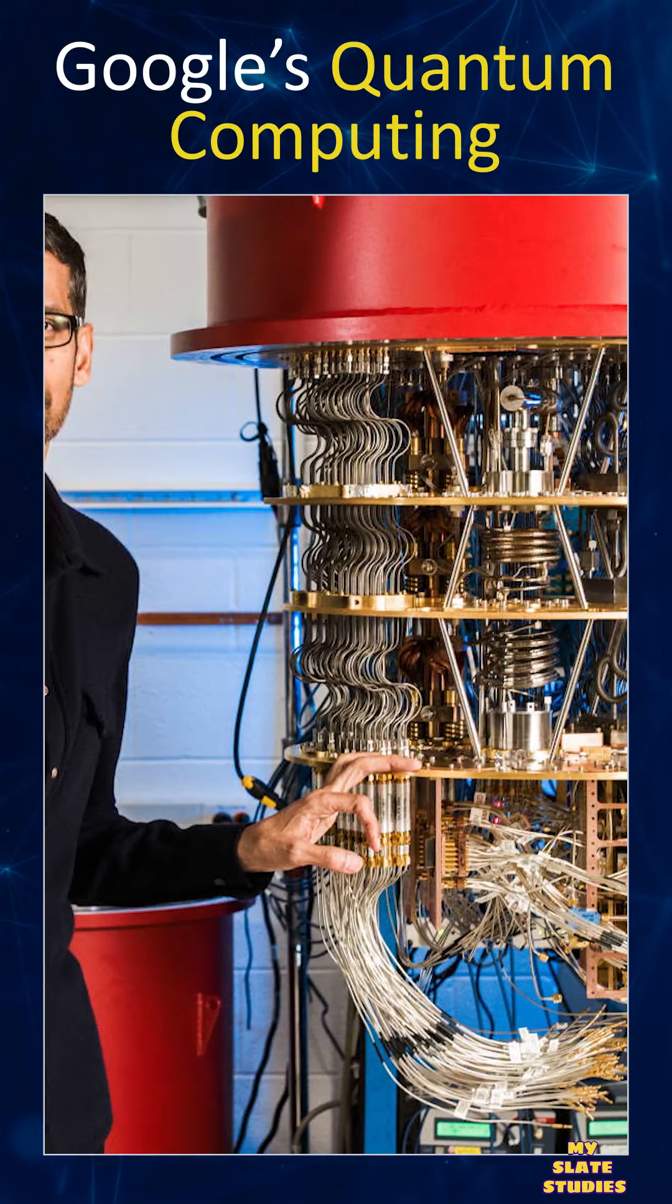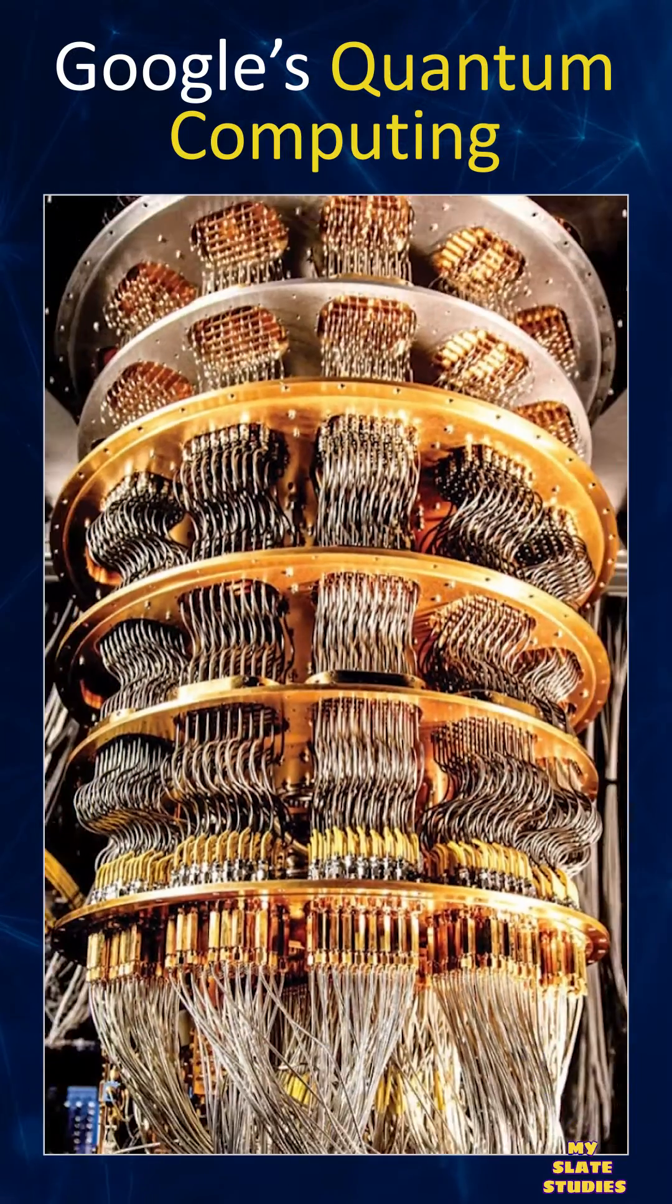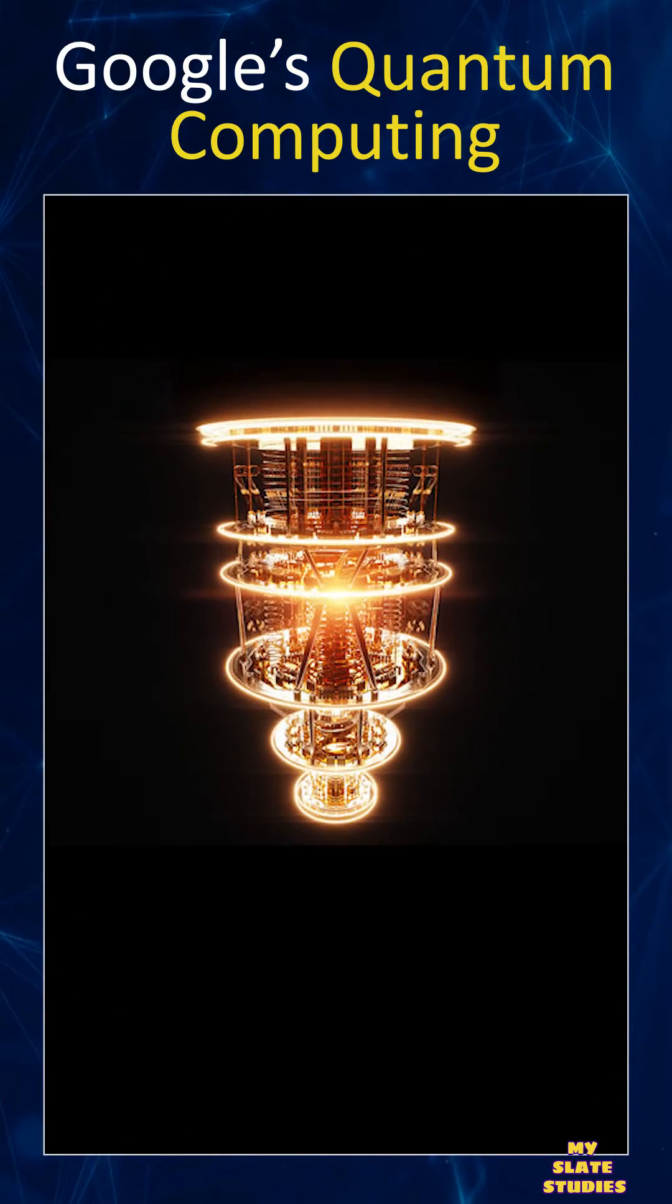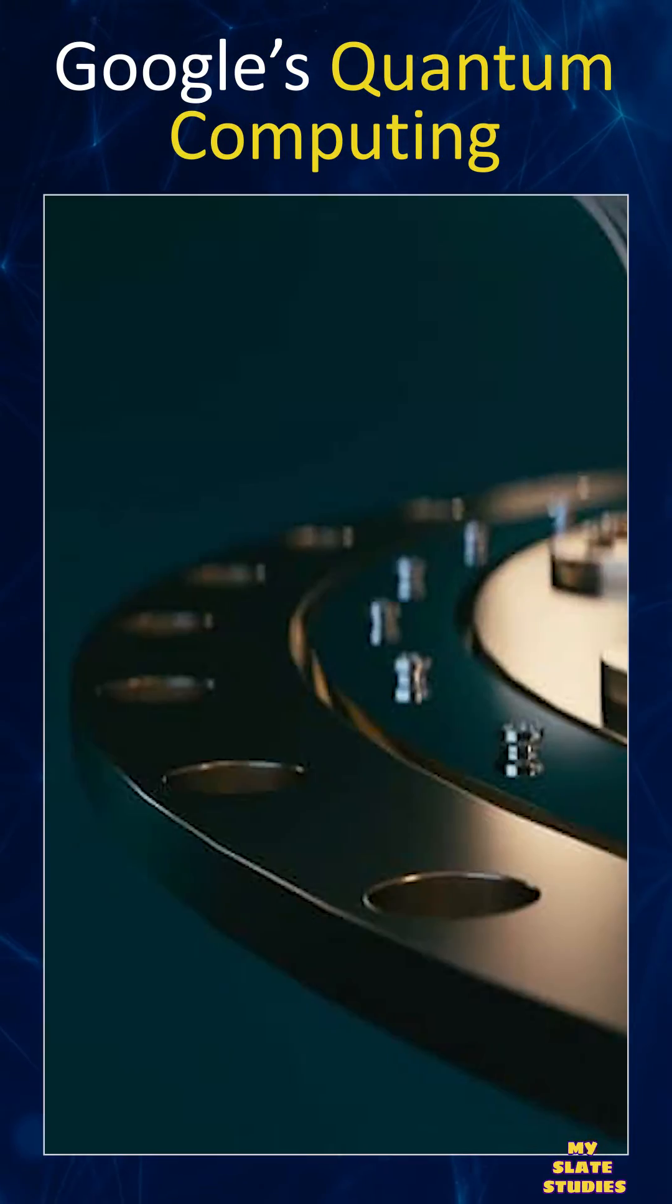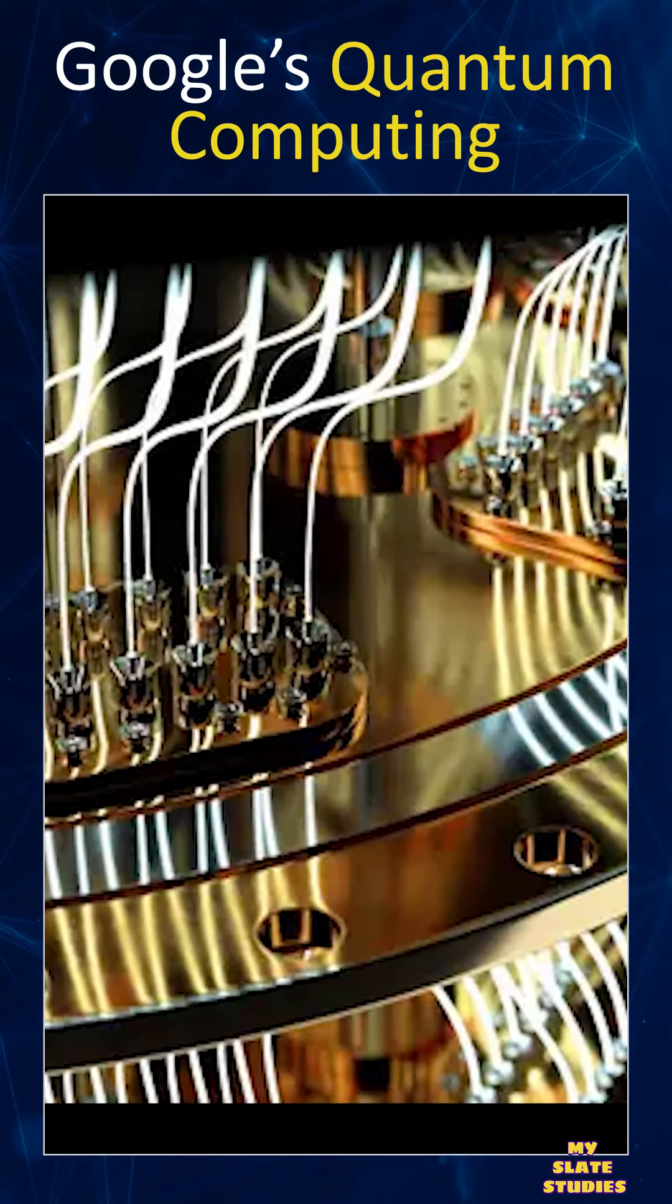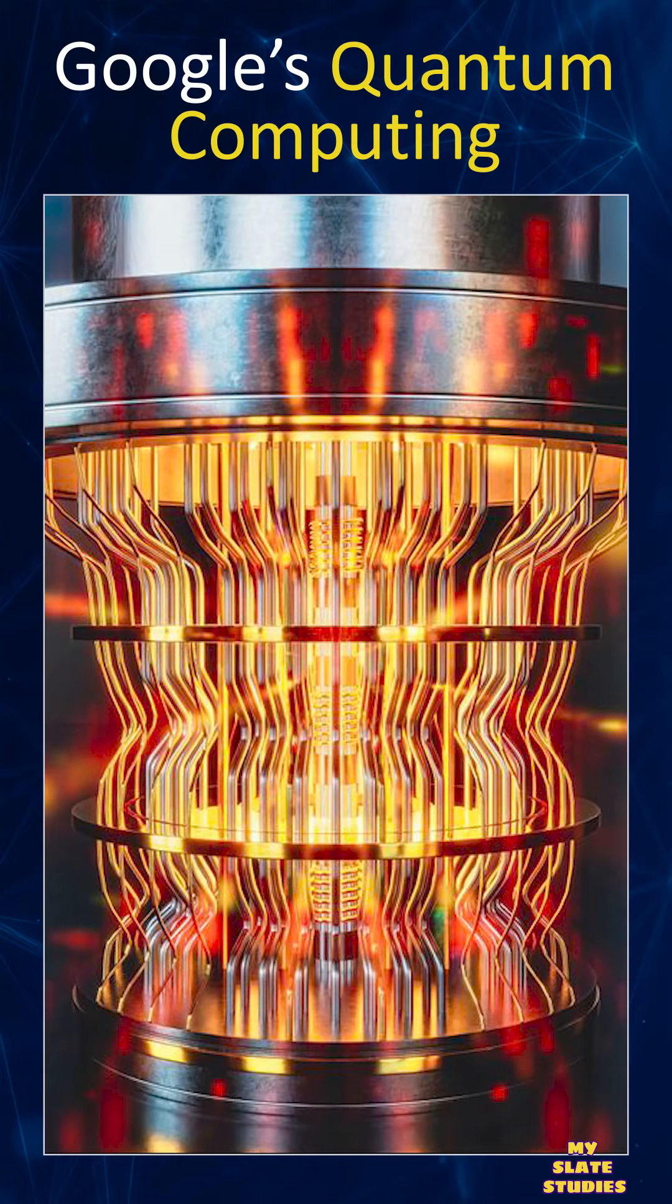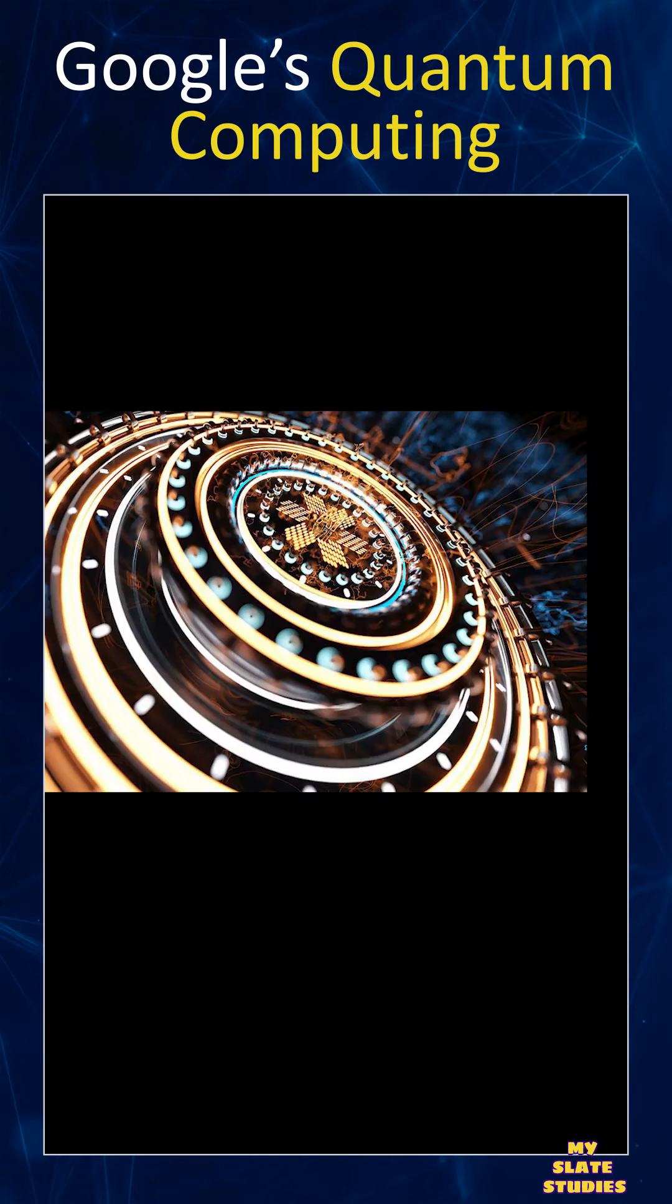Google had made significant strides in quantum computing, but there may have been further advancements since then. Google's most notable achievement in this field was the development of a 53-qubit quantum computer named Sycamore. In 2019, they claimed to have achieved quantum supremacy, a milestone where a quantum computer outperforms the most powerful classical computers in a specific task.